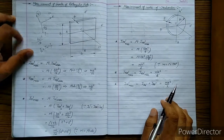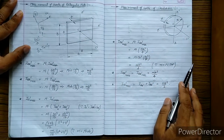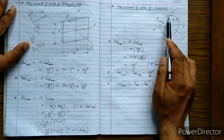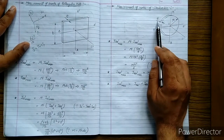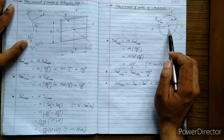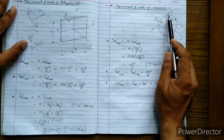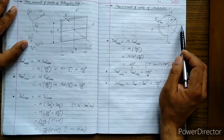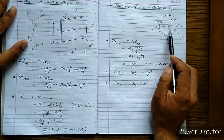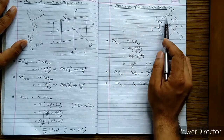Hello students, today we will discuss our next topic: mass moment of inertia of a circular plate. Suppose this is the circular plate given to us; its thickness is t units and its radius is r units. We have drawn the center, and from that center three axes are shown — axis AA', BB', these two axes are in the plane of the circular disc, but axis CC' is perpendicular to the plane of the circular disc.